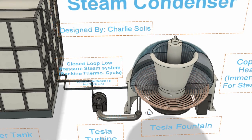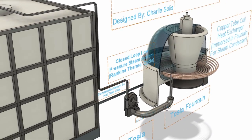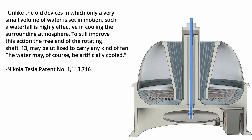So I'm going to start this video off with a quote from the fountain patent where Tesla is quoted as saying, unlike the old devices in which only a very small volume of water is set in motion, such a waterfall is highly effective in cooling the surrounding atmosphere. To still improve this action, the free end 13 of the rotating shaft may be utilized to carry any kind of fan. The water may of course be artificially cooled.